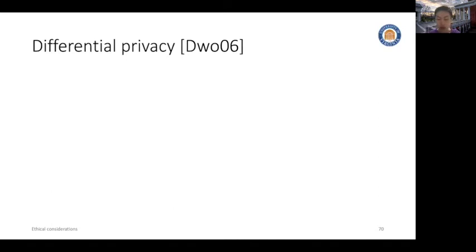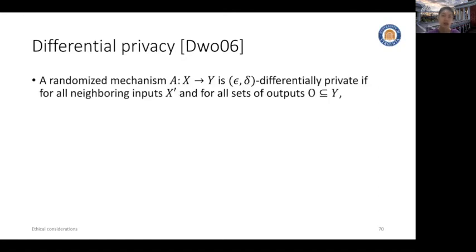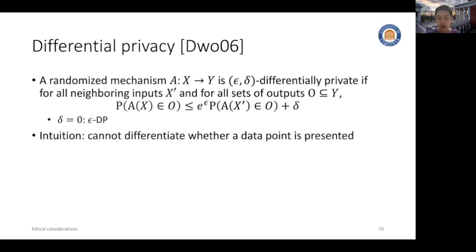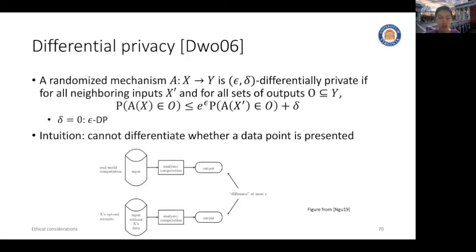Let's first take a look at the notion of differential privacy. A randomized mechanism A is called epsilon-delta differentially private if for all neighboring inputs it satisfies a certain inequality. The intuition is that by looking at the output, one cannot differentiate whether a data point is present in the dataset — essentially the difference between the outputs should be at most epsilon.